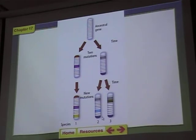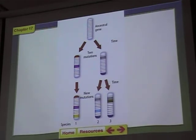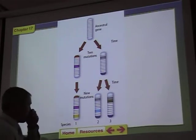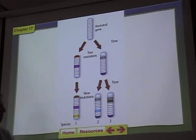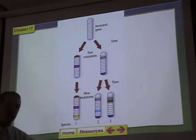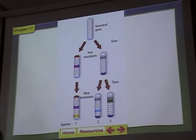There's also DNA evidence that is used to make evolutionary relationships between organisms. This is a chromosome — it's supposed to represent a chromosome, which carries genetic information.